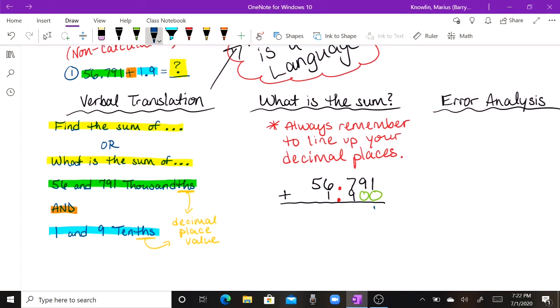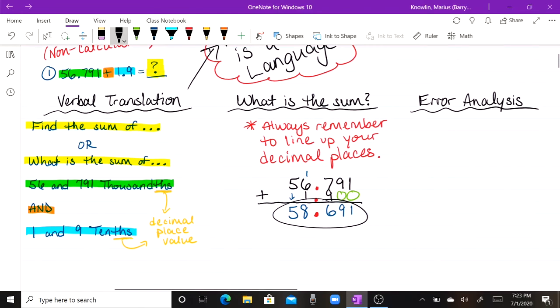We'll use the blue. 1 plus 0 is 1. 9 plus 0 is 9. 7 plus 9 is 16. Drop the 6. Carry the 1. 1 plus 6 plus 1 is 8. And we can bring down that 5. And of course, we're going to keep our decimal place in the same location. So we have a final answer of 58 and 691 thousandths is our final answer. That is the sum to this question.